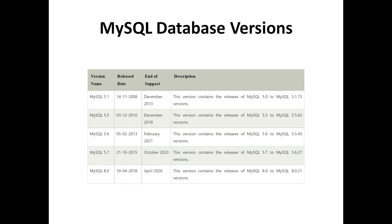These are the database versions of MySQL. There were many versions from MySQL 3, but we will cover MySQL 5, 5.5, 5.6, 5.7 and MySQL 8. Version 5.0 covers releases from 5.0 to 5.1.73. Version 5.5 contains versions from 5.5 to 5.5.62. MySQL 5.7's end of support is October 2023, which is why most are upgrading from 5.7 to version 8. MySQL 8 has been increased to 8.0.23.